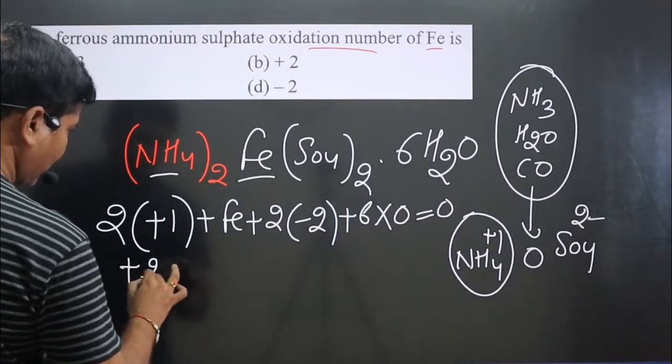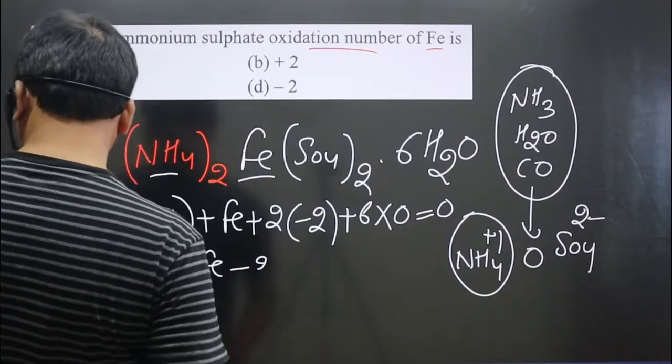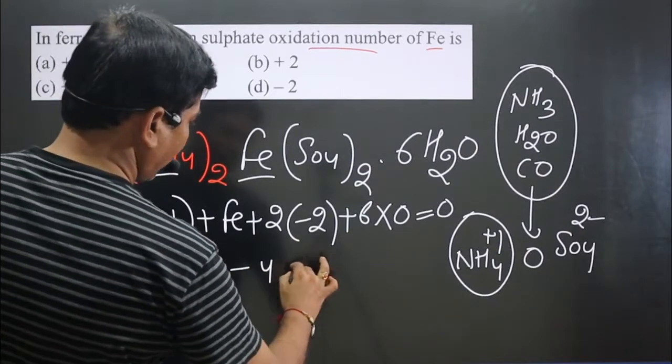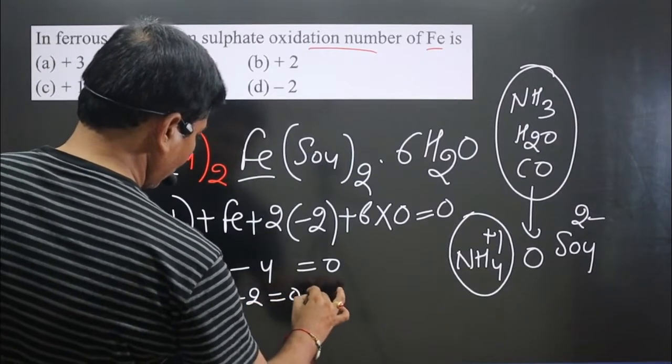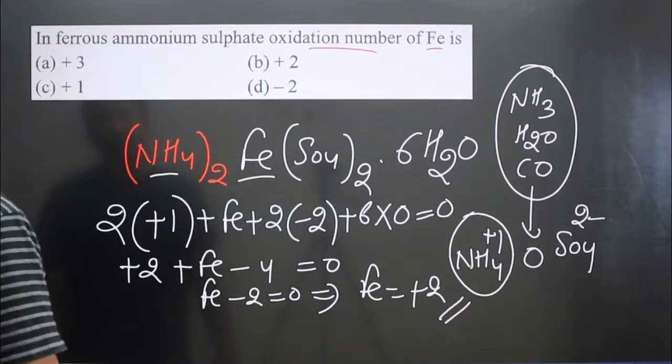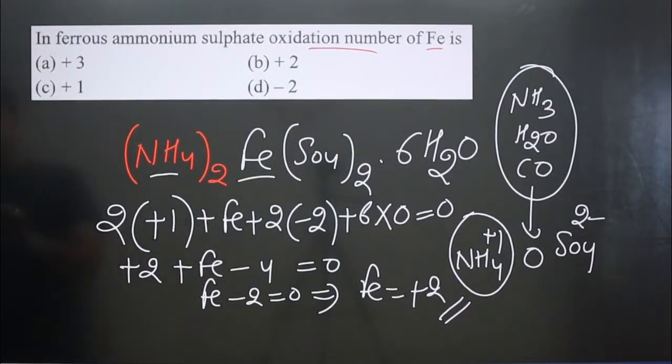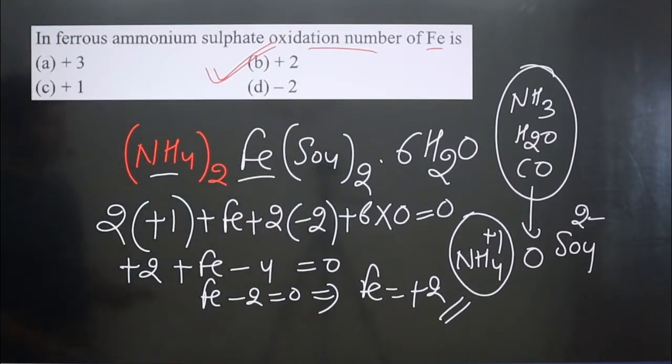Simplify it. It is plus two, then Fe, then minus four is there, and equals zero. Then Fe minus two equals zero. From here we get Fe is present in plus two oxidation number. So in ferrous ammonium sulfate, iron is present in plus two oxidation number.